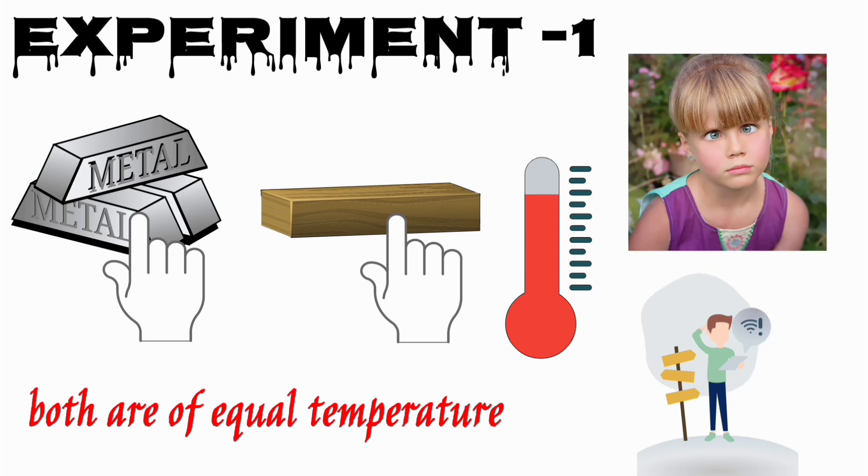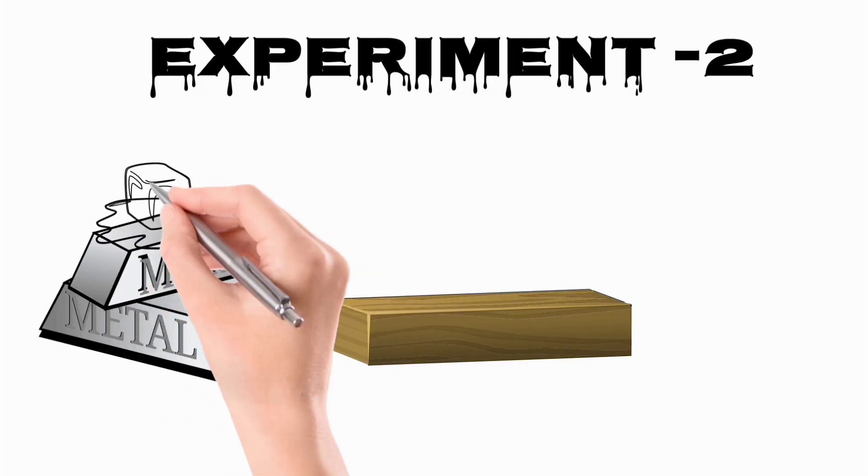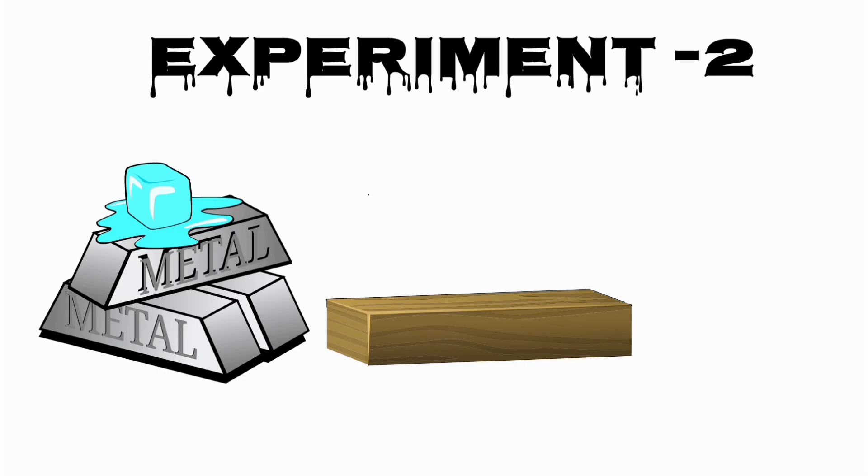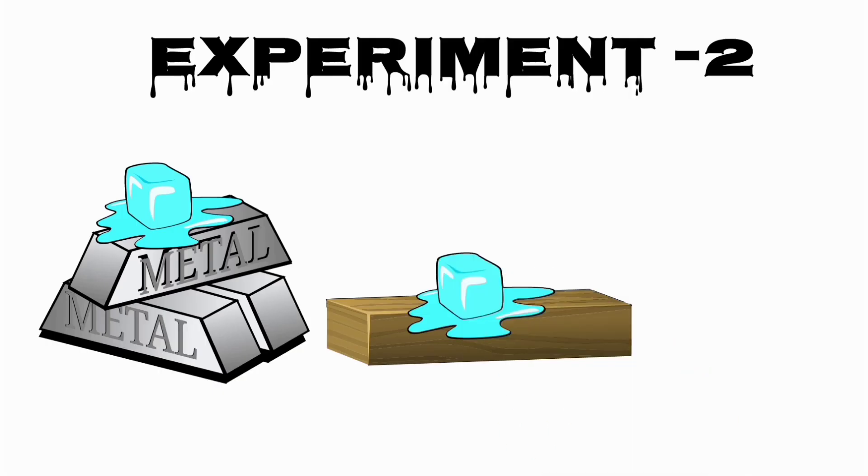But before getting the answer, let's do another experiment. Experiment number two. Take the same blocks as you used in experiment number one. Now put an ice cube on both of them. Can you predict which ice cube will melt first? The ice cube on iron or ice cube on wood?